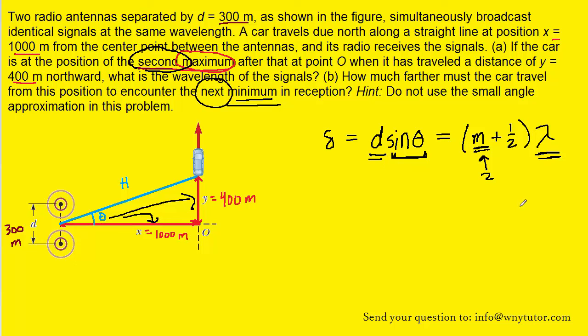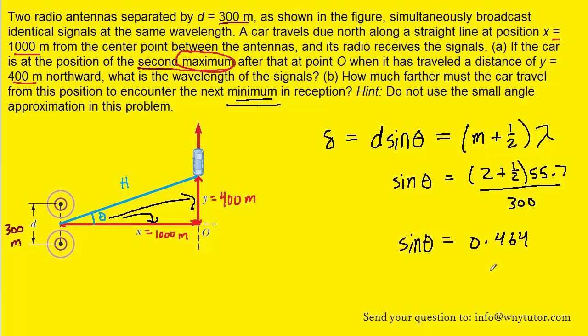m, and the wavelength. And then after plugging in, we can divide both sides by 300. That's going to help us isolate the sine of theta. And then we can simplify that on our calculator.